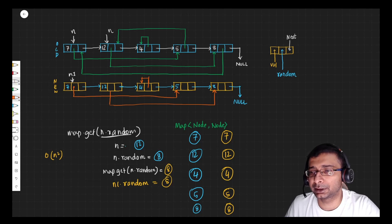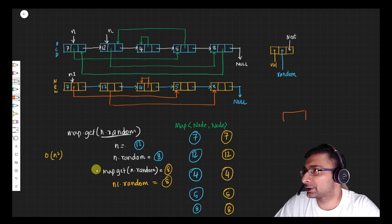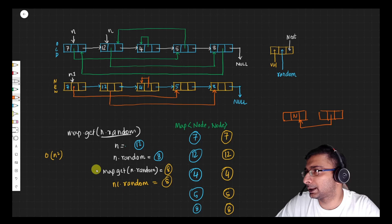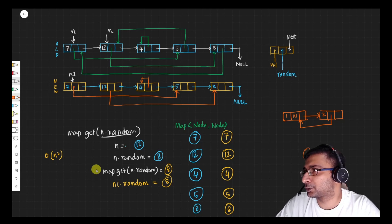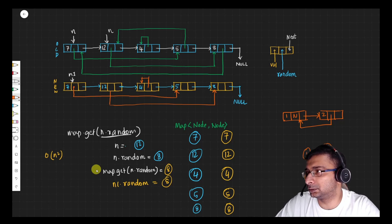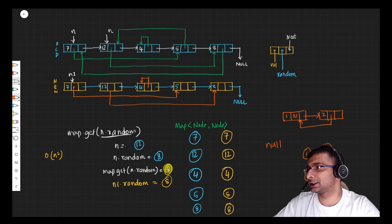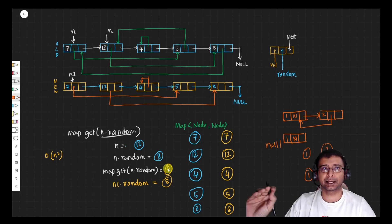If a node's random pointer is null, map.get(null) returns null since null has no entry in the map — so that null mapping is established automatically without any special handling. This covers all cases cleanly.